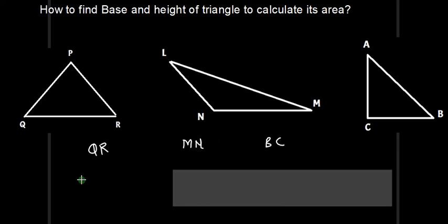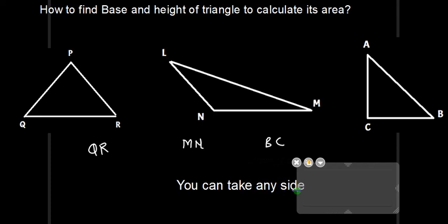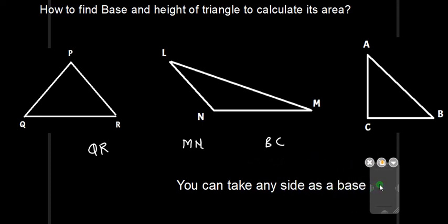I am not saying that you have written the wrong answer, but the thinking behind it — the reason why you wrote it — that is wrong, and that is creating a problem in understanding in 10th standard. According to me, the correct answer is: you can take any side as a base. Your misconception is that the bottom side of a triangle is always the base, and it never comes to your mind that the other sides can also be the base.